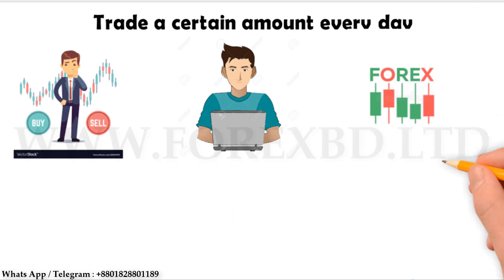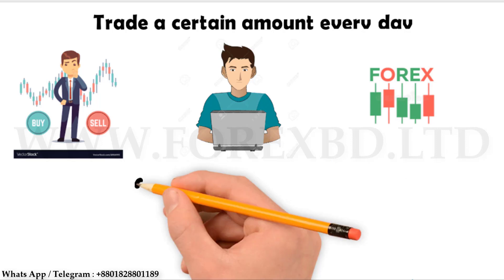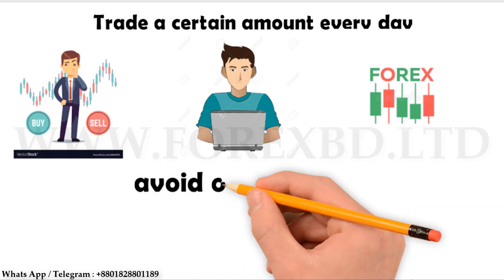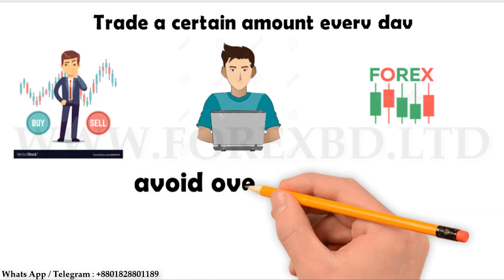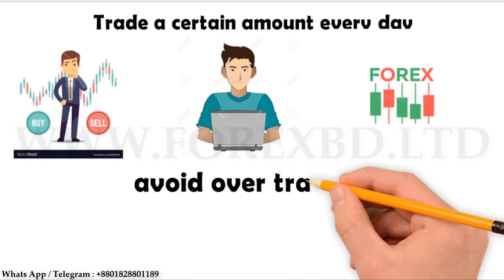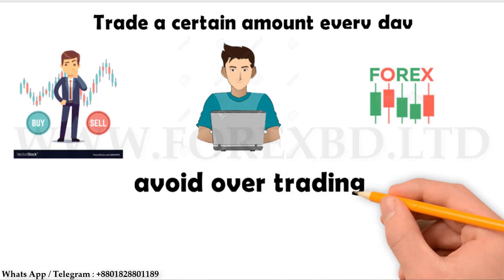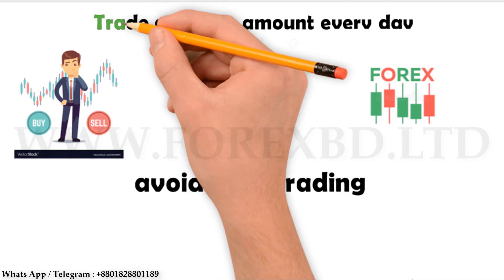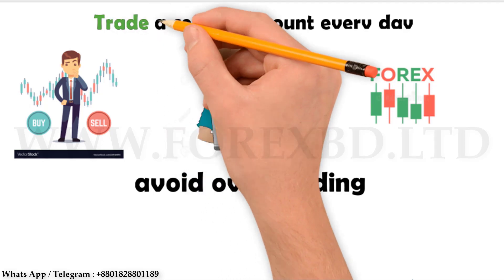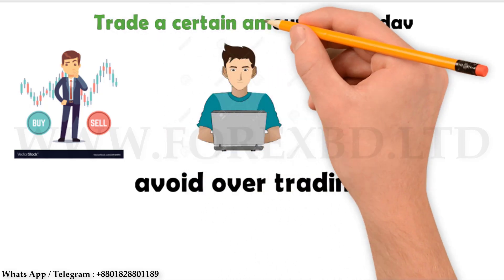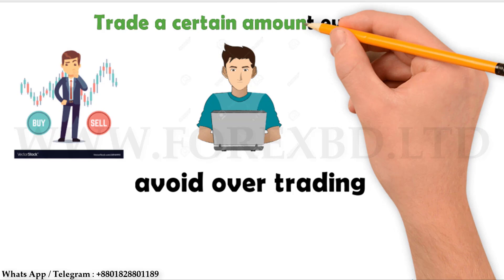If you can't make a profit one day, there are 29 more days in a month — so wait for a better day. If you can't make a profit one week in a month but make a profit in the remaining three weeks, you will be profitable at the end of the month. Never over-trade. Remember: a business is not always profitable, so look at it through the eye of business.